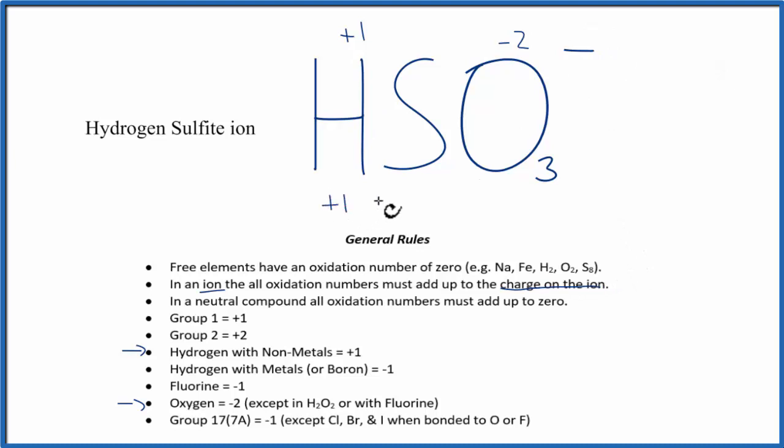So plus one plus, we don't know what this is, plus three times minus two, that's minus six. That all has to equal the charge on the ion, minus one. So one plus four.